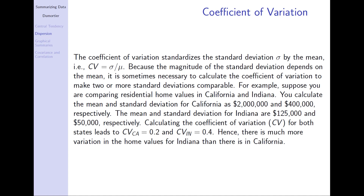The coefficient of variation standardizes the standard deviation by the mean, because the magnitude of the standard deviation depends on the mean. For example, comparing home prices in California and Indiana: California has a mean of $2 million and standard deviation of $400,000; Indiana has a mean of $125,000 and standard deviation of $50,000. When you calculate the coefficient of variation — standard deviation divided by mean — California is 0.2 and Indiana is 0.4. This means there is much more relative variation in home values for Indiana than for California.